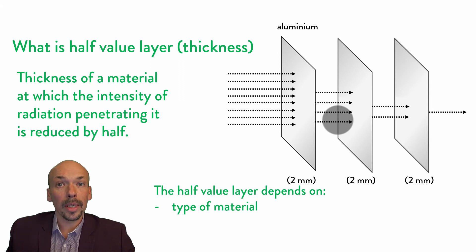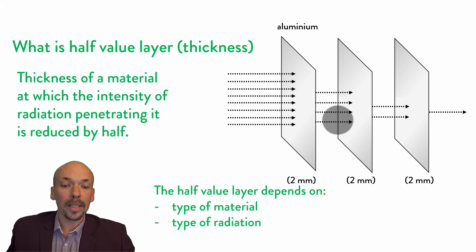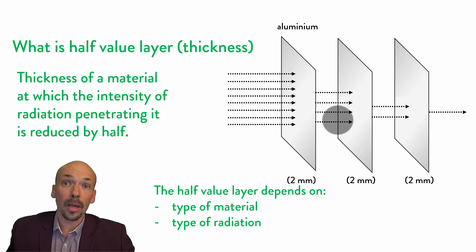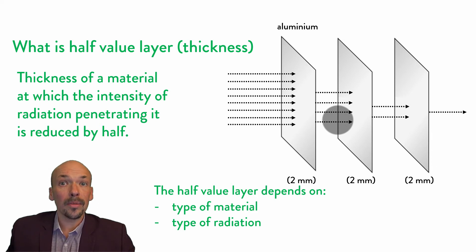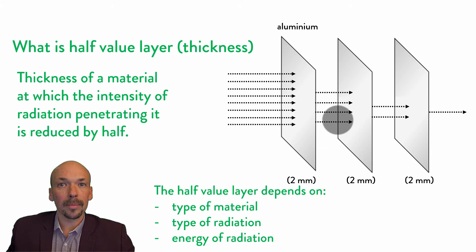The half value layer also depends on the type of radiation — so either it's alpha, beta, gamma, or x-rays. And finally, the energy of the radiation.